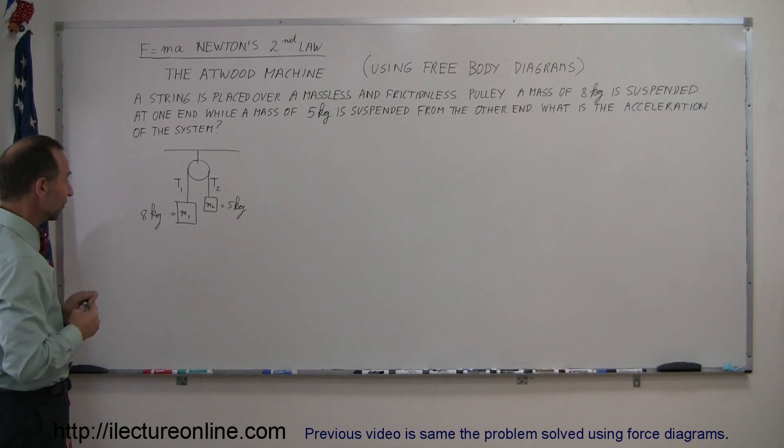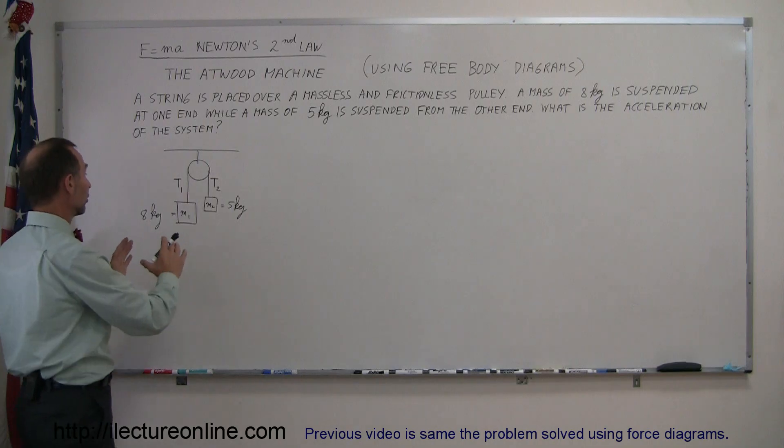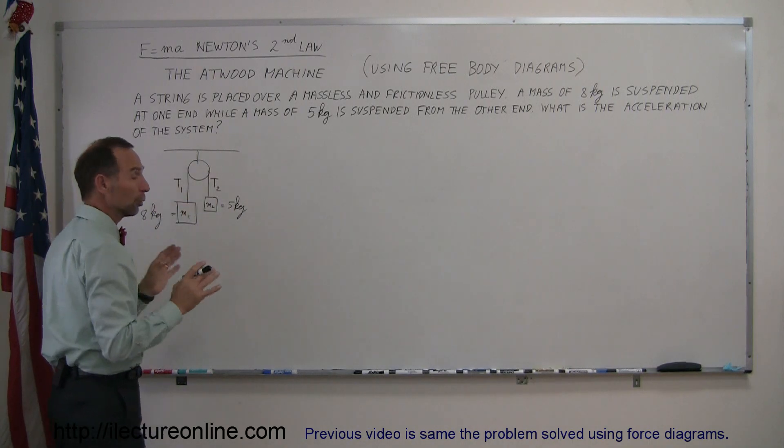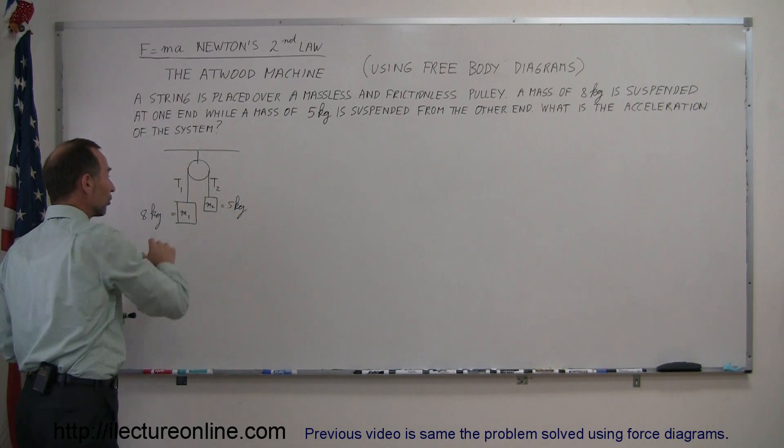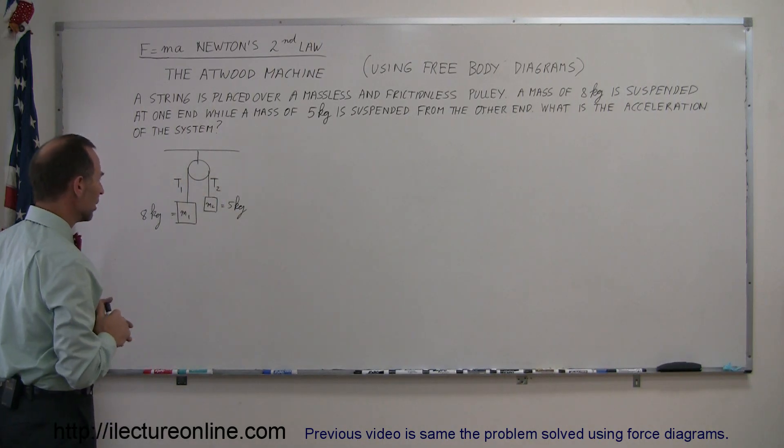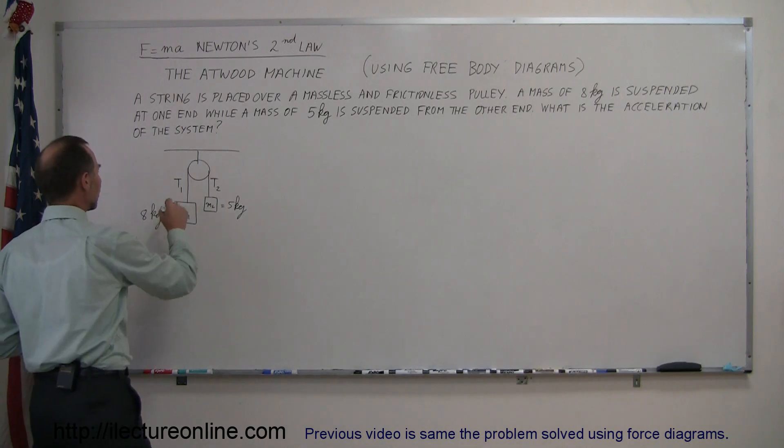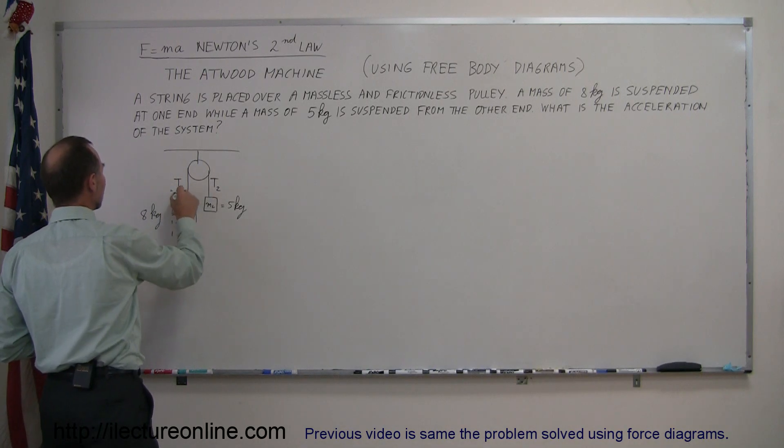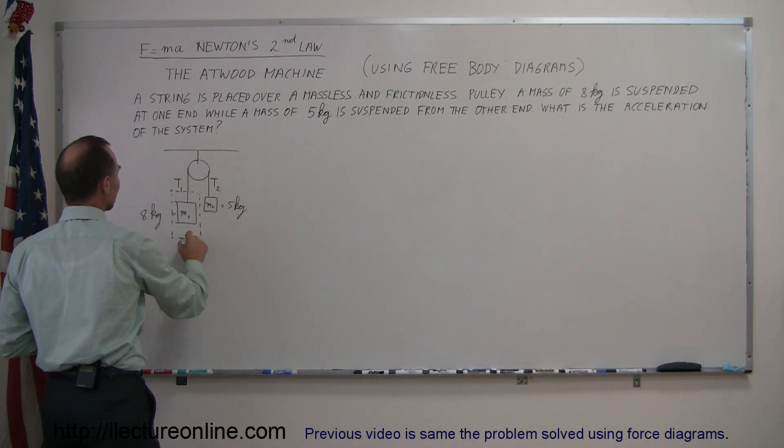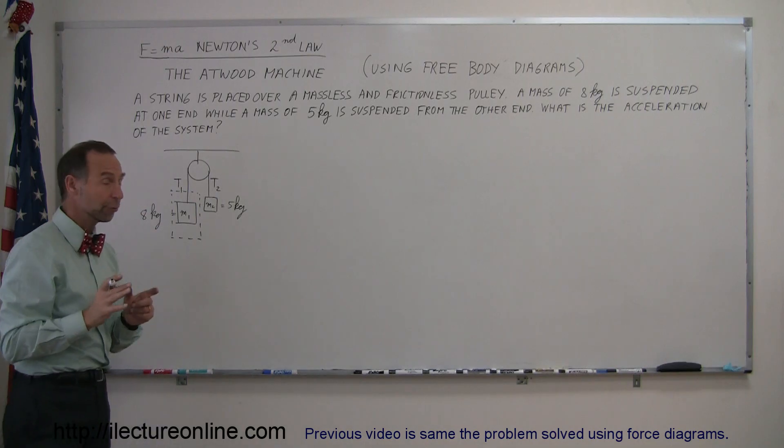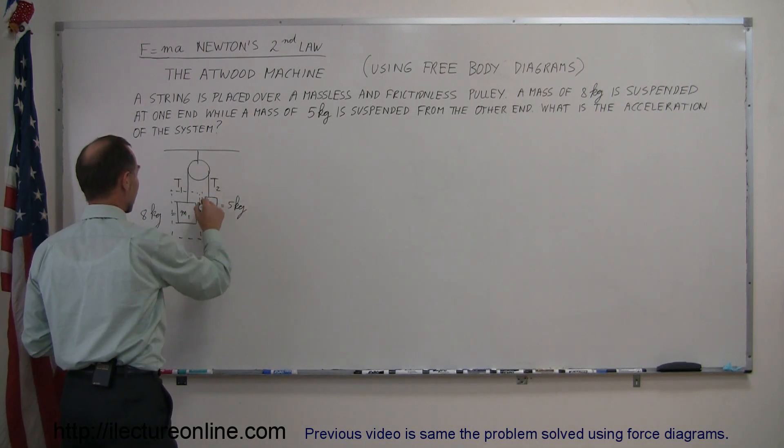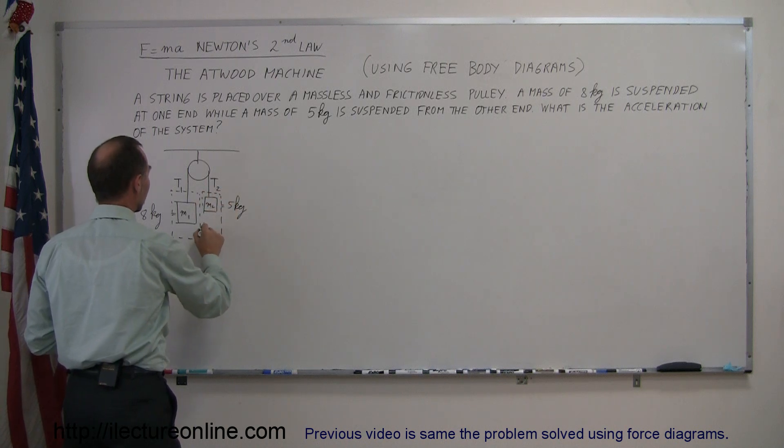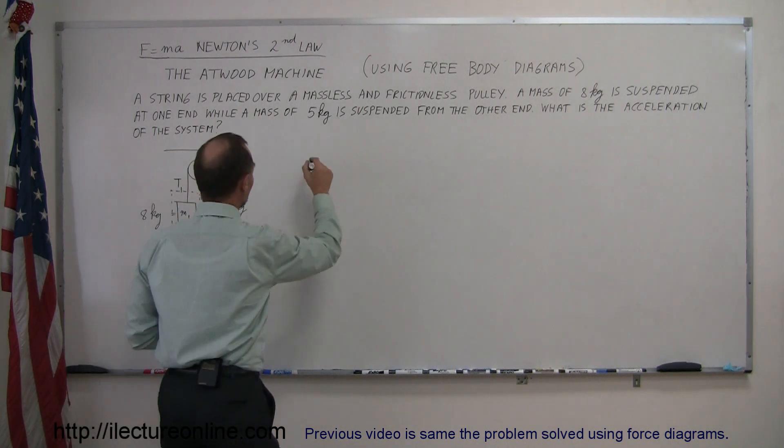We now have to try to find the acceleration of the whole system. The way we did it before was to consider the whole system as one unit and only look at the forces acting on the system. We didn't talk about T1 and T2. But now what we're going to do is draw a box around each of the masses, and then look at all the forces acting on each of the masses independently.